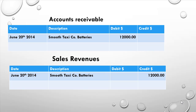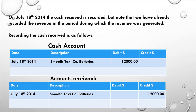The revenue was earned in June, so that's when it's recorded. Then in July, the cash received is recorded. We've already recorded the revenue in the period it was generated, so now we record the cash: debit the cash account with $12,000 and credit accounts receivable with $12,000, because we're no longer owed that money and can remove it from accounts receivable.